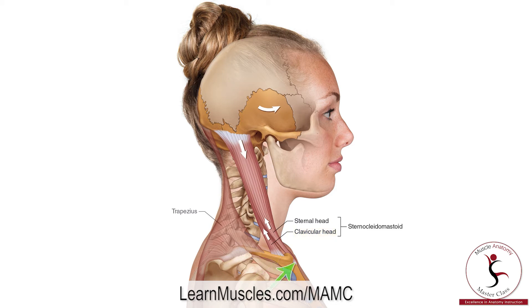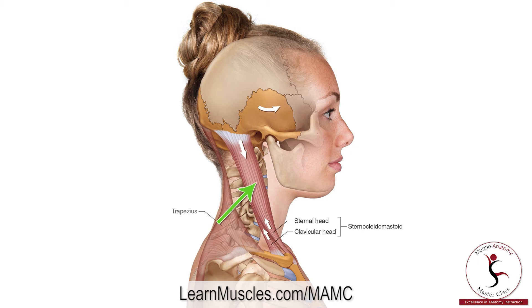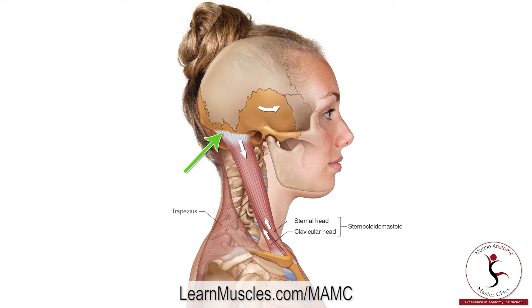From there, the two heads run superiorly and posteriorly, gradually merging into one belly that continues to run superiorly and posteriorly, attaching onto the mastoid process of the temporal bone and the lateral one-third of the superior nuchal line of the occiput.